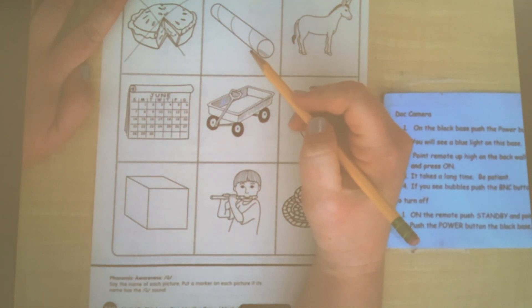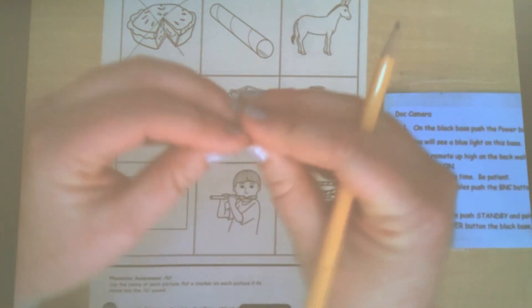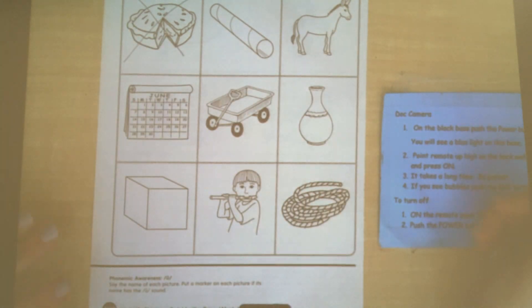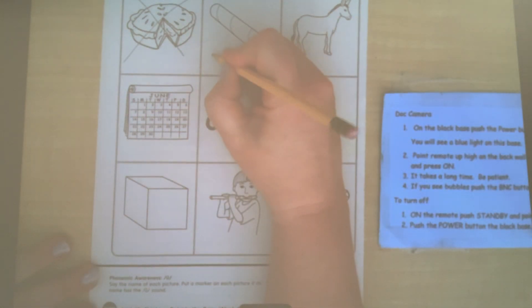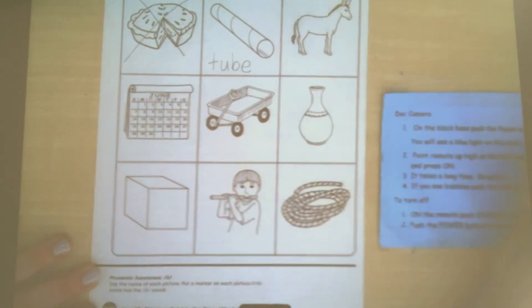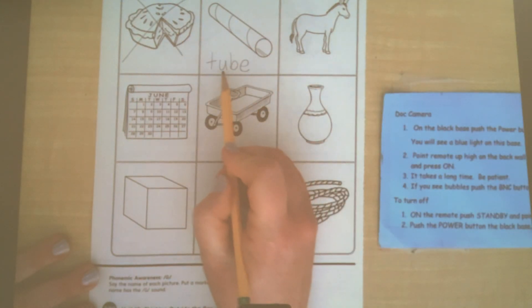Tube. A tube. Oh, this would make a good telescope. Tube. I hear that OOO sound. Let's stretch it out. Ready? Tube. Sound it out on your arm. T-OOO-B. Write it. T-OOO-B. Bossy E. There's that long U sound in there.